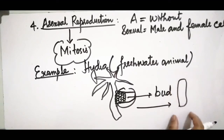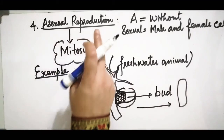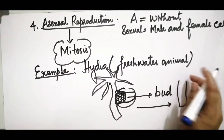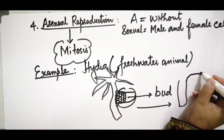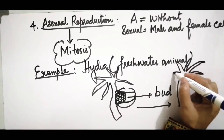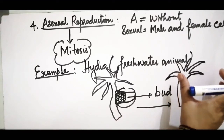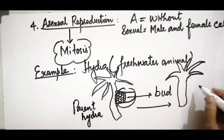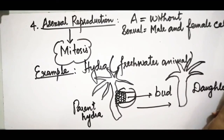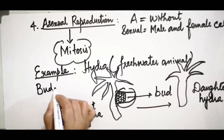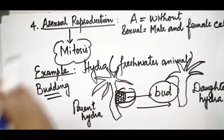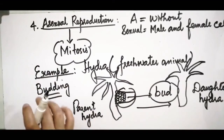Mitosis continues in the cells of the bud and it grows into a new individual hydra. The bud detaches from the parent hydra and, through further repeated cell division by mitosis, develops its tentacles just like the parent. The new organism is called the daughter hydra. This completes the process of budding in hydra, which is asexual reproduction occurring through mitosis.